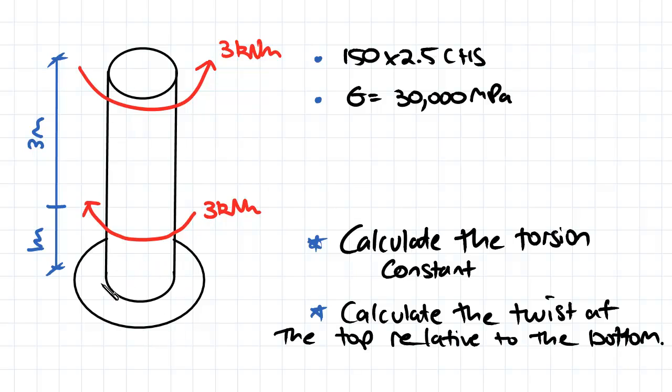Because the sum of the torsion applied to this shaft here is equal to zero, we've got torsion in the anti-clockwise direction and an equal torsion in the clockwise direction.